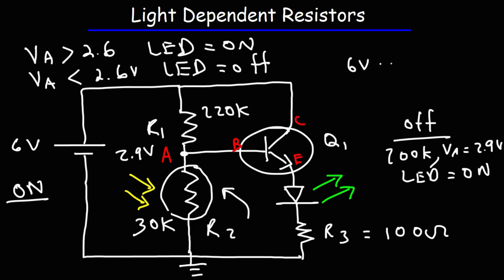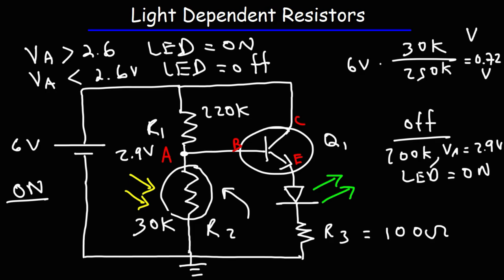It's going to be 6 volts times R2 (30K) divided by the sum of R1 and R2, which is 30 plus 220, or 250K. The voltage will now be 0.72 volts. As you can see, this is too low to power the LED — the LED requires 2 volts and the transistor requires 2.6 volts to activate. Because VA is small, the transistor will be off, so no current flows from collector to emitter to activate the LED.